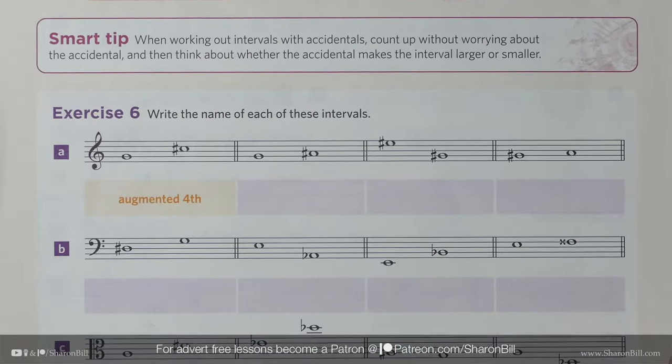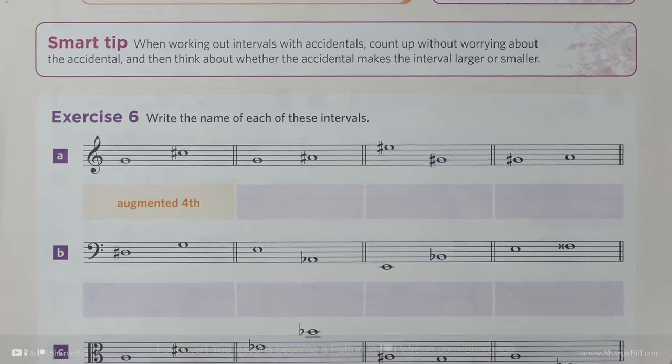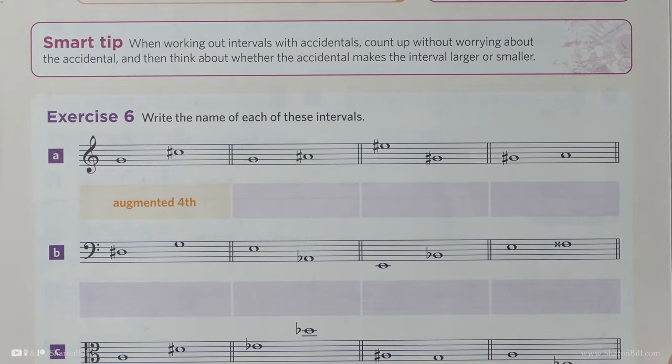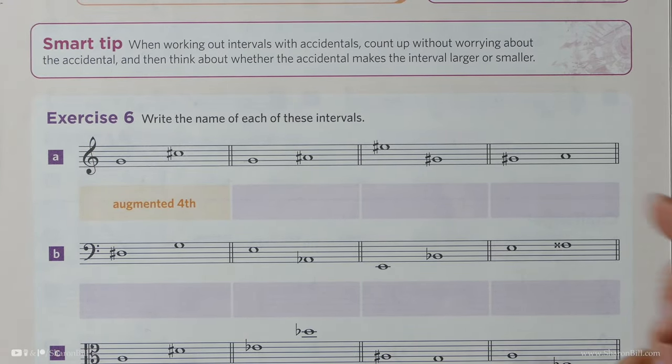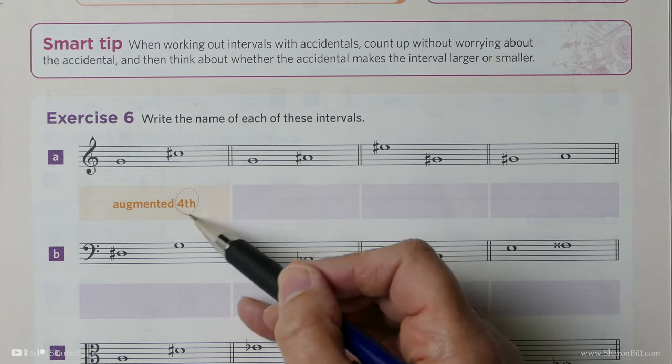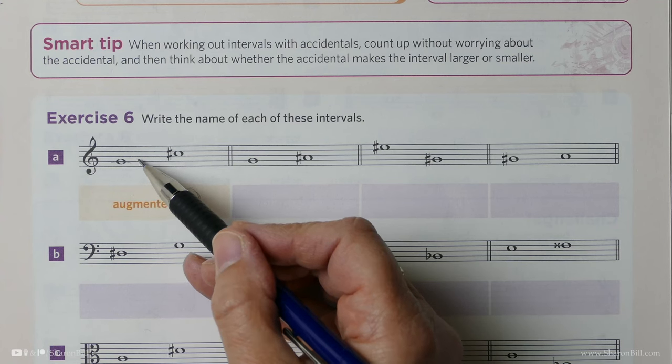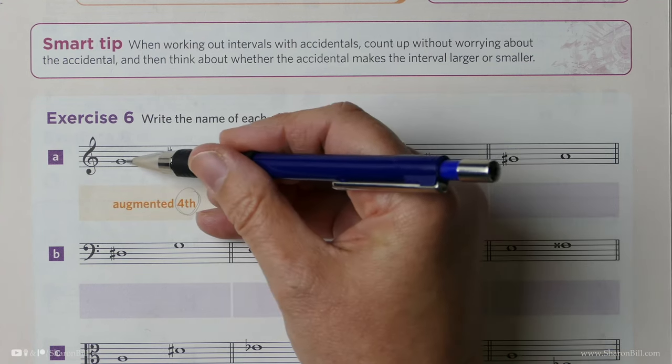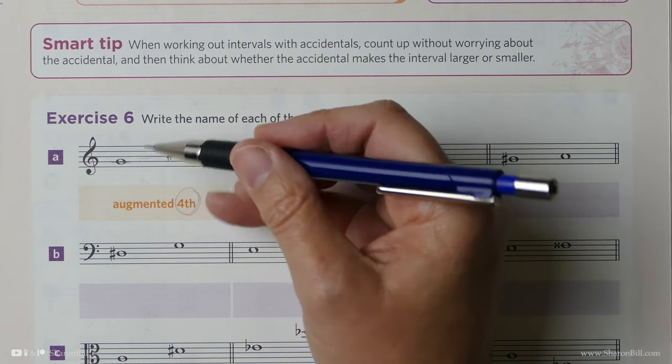And so here in exercise six, we're asked to name these intervals that they've given for us here. And so the first job is just get the number. So this is a one, two, three, four. The only way we can go wrong is if we forget to count this given low note as number one.